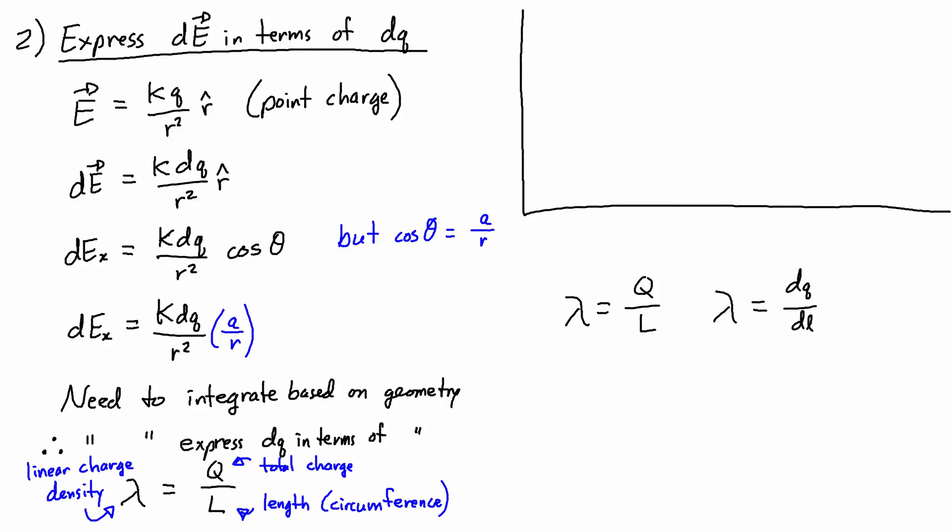And then, because I need to express dq in terms of the geometry, what I do is I isolate dq. So I get dq equal to lambda, which is the linear charge density, times dl. And then I can substitute that into the expression for dx. So I have dE along the x-axis is equal to k, and I'll bring in the a because that's one of the constants given, divided by r cubed times lambda dl.